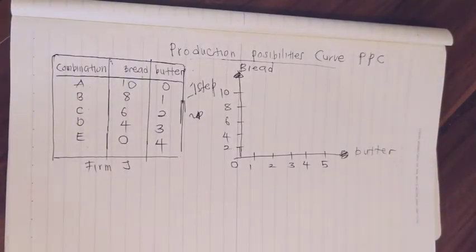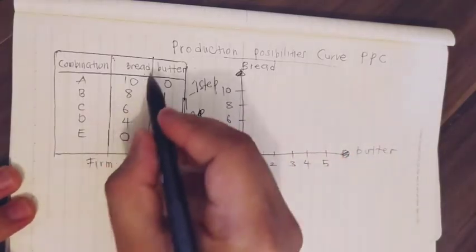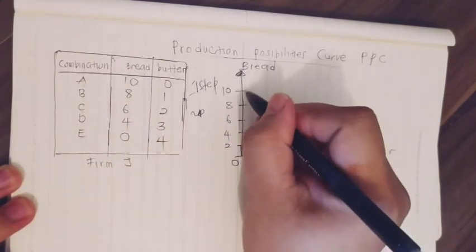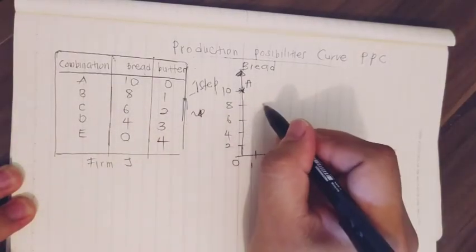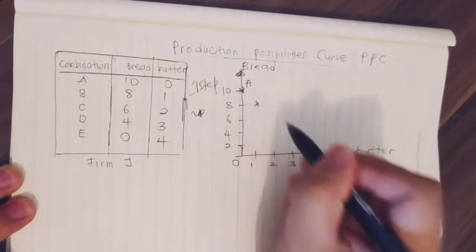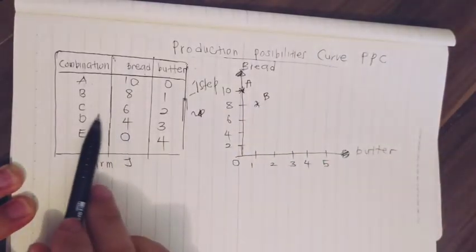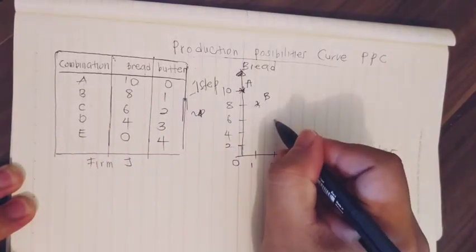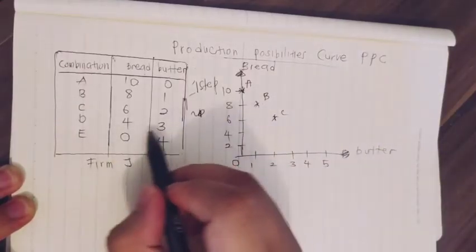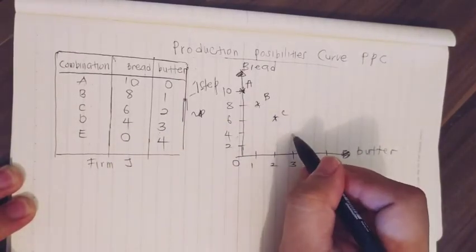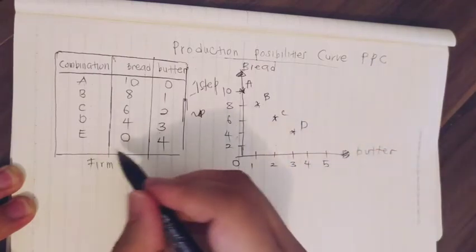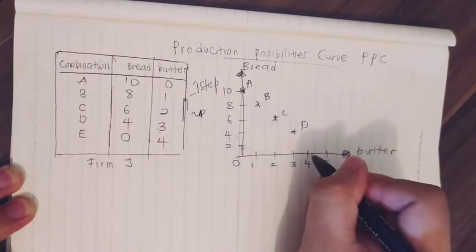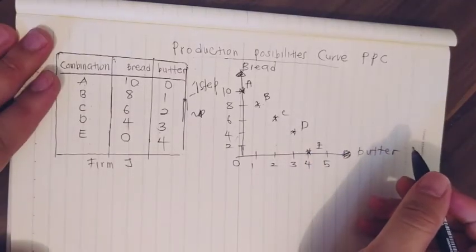Now we plot the information into the graph. Combination A: ten bread, zero butter — plotted here. Combination B: eight bread, one butter — plotted here. Combination C: six bread, two butter — here. D: four bread, three butter — here. And E: zero bread, four butter — plotted here.